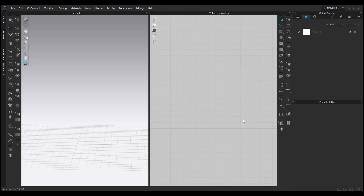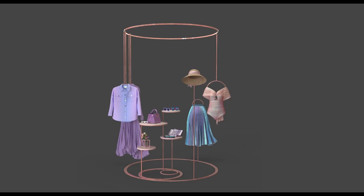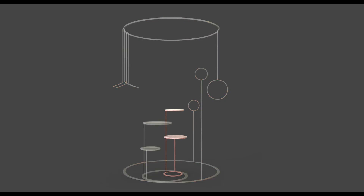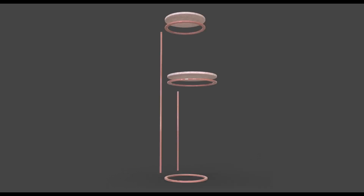Before we begin I want to show you what we are aiming for — this is the final result we want. This is the structure itself and this is the main focus of the first part of the workshop. If we have a closer look, we need these types of shapes: two circular shapes with a bit of thickness, three circular but empty shapes, and two straight tubular shapes.